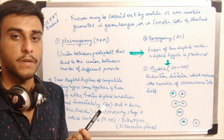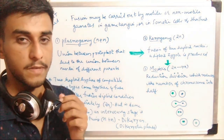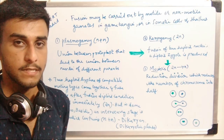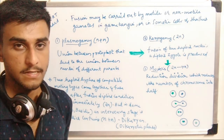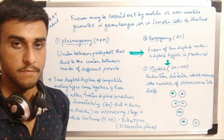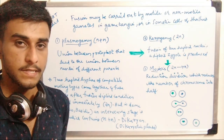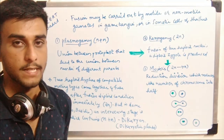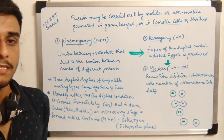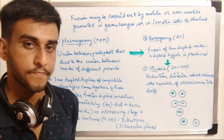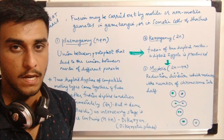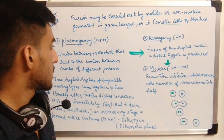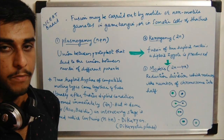The first stage is plasmogamy — the fusion of the protoplasm. Two different protoplasm from two different gametes come together and fuse. The next stage is karyogamy — the fusion of the nucleus. First the two sex cells come in contact, the protoplasm fuses, and then the nuclei fuse.